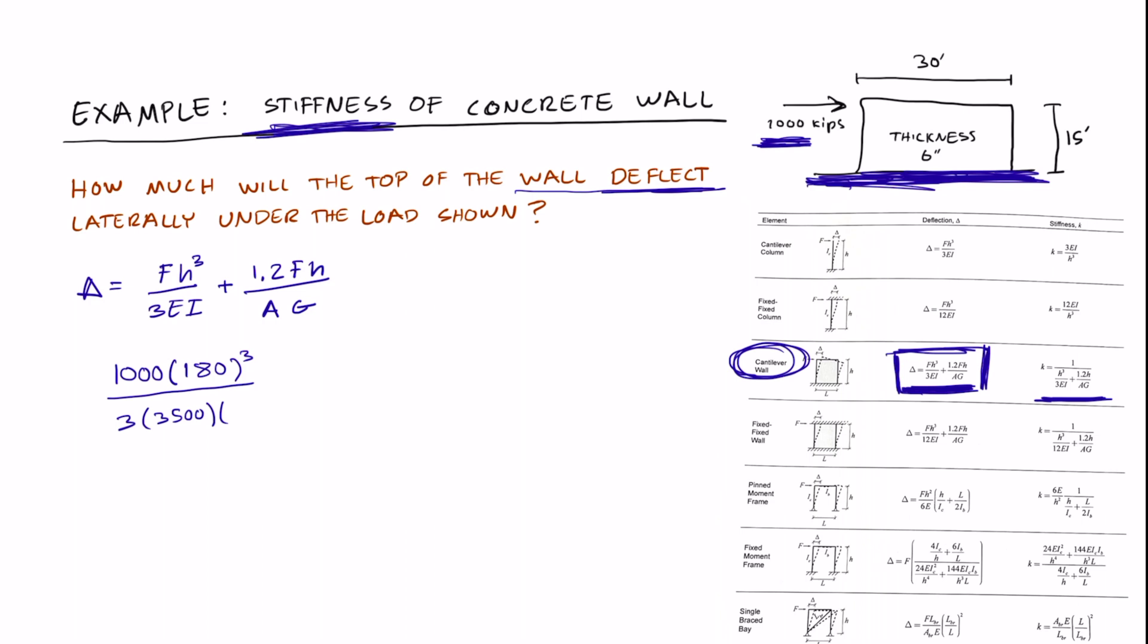So how can we find I? We could use the formula for the moment of inertia, which is I equals BD cubed, divided by 12. That's for a rectangular cross-section, and that's going to be 6 times 360 cubed, divided by 12. And so that will give us 23,328,000 inches to the fourth.